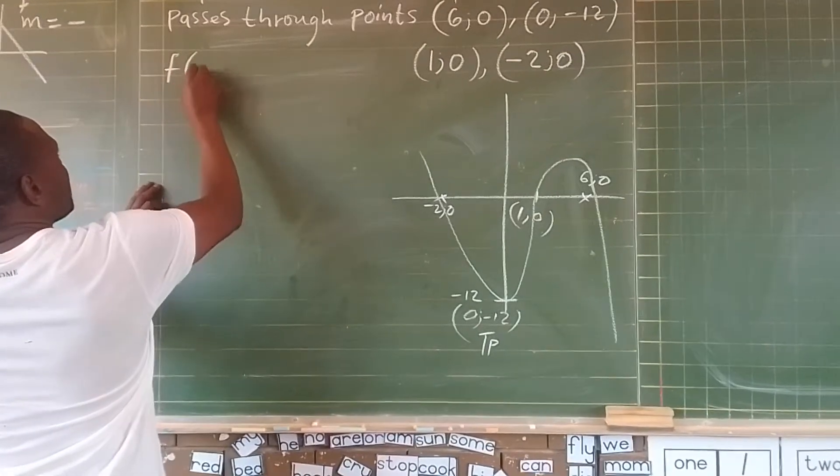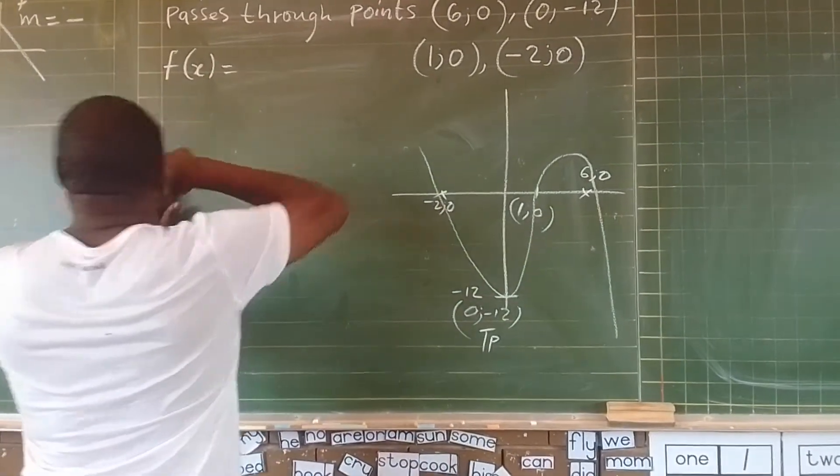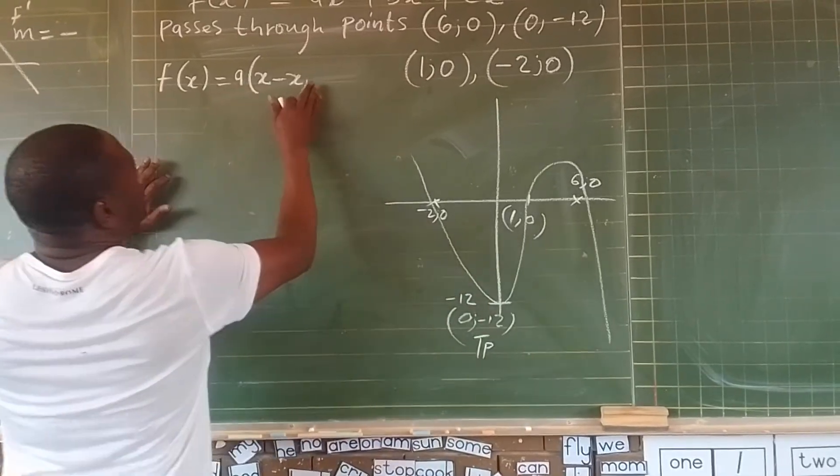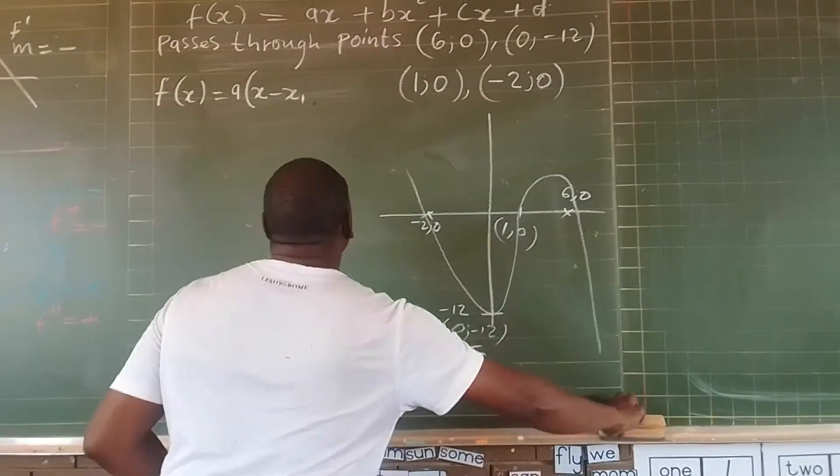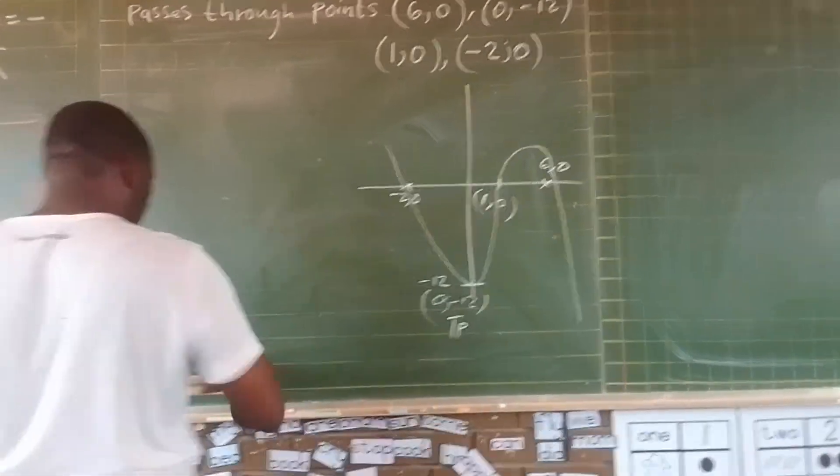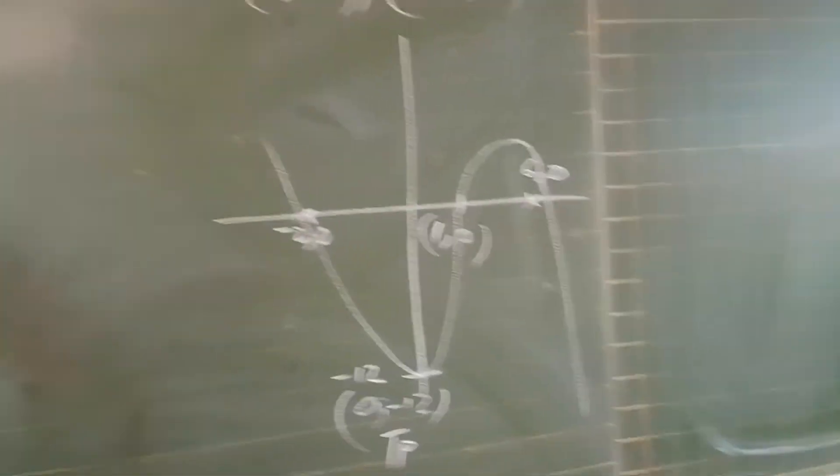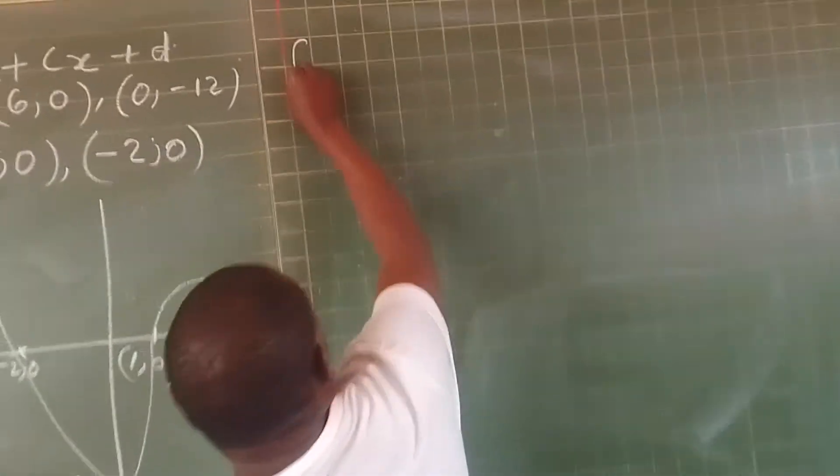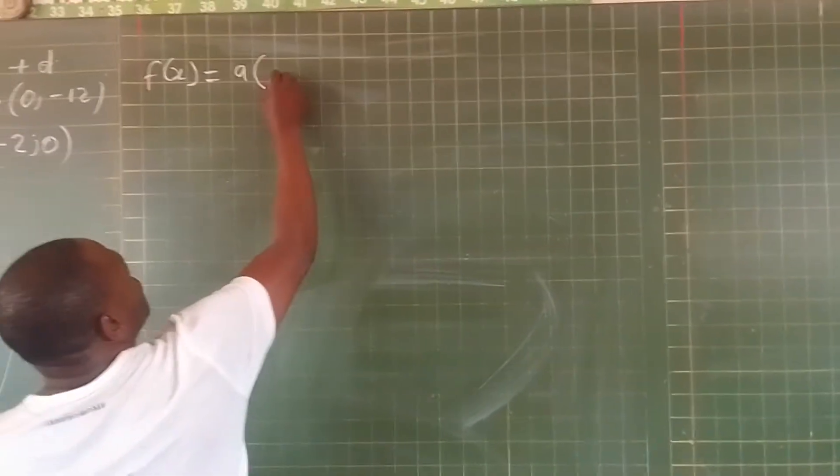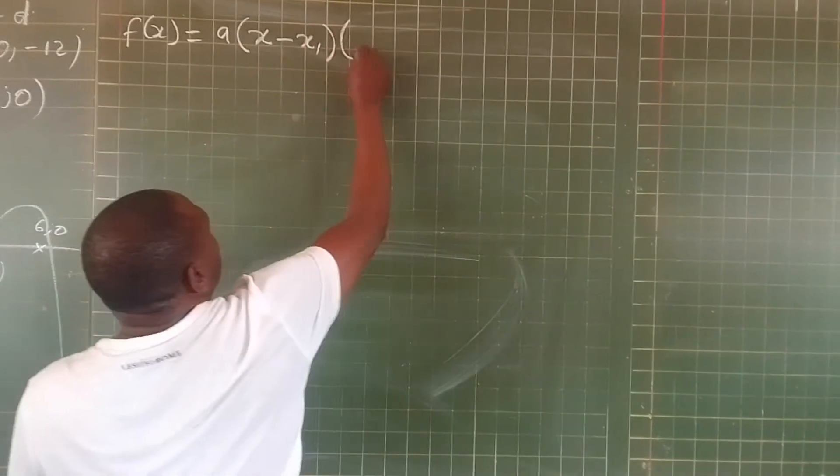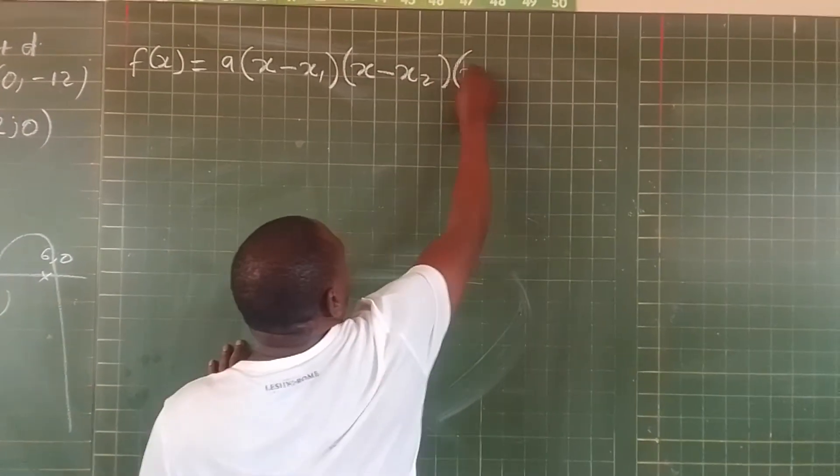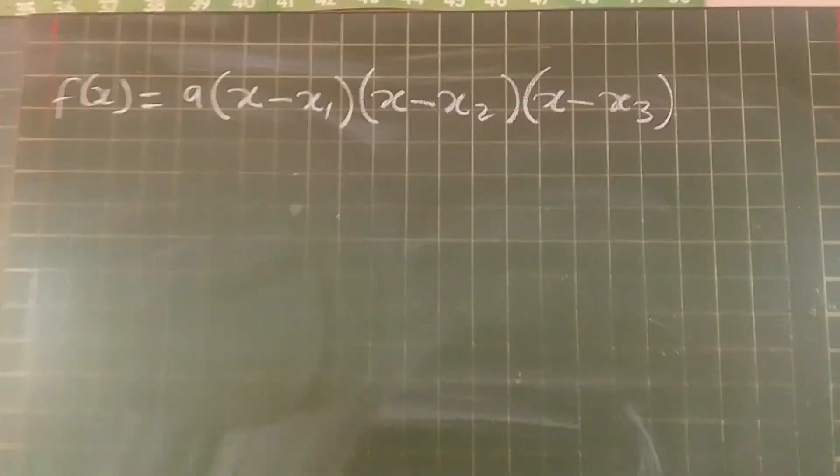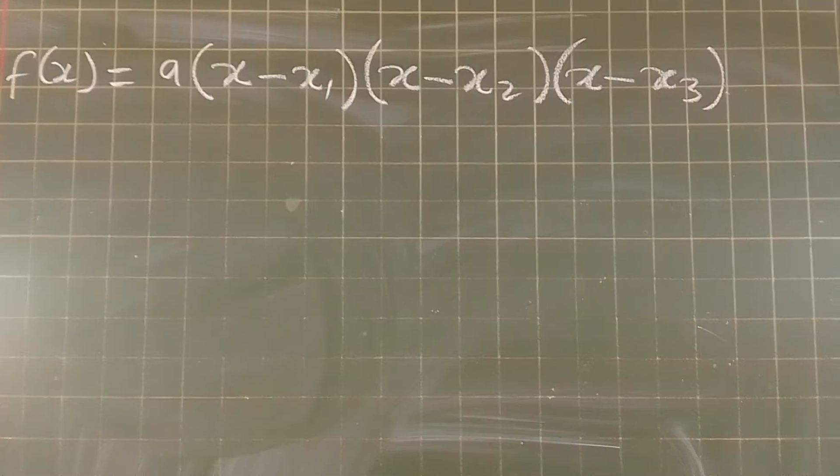Now, our graph is f(x) equals a times (x - x₁)(x - x₂)(x - x₃). This is our cubic function. We have to find a, b, c, and d.